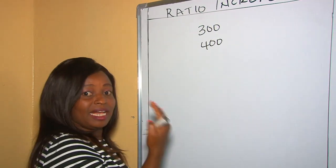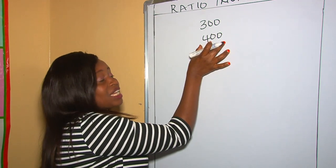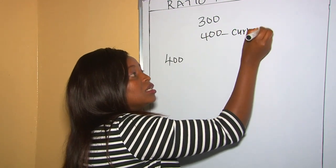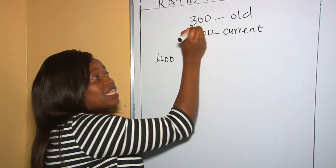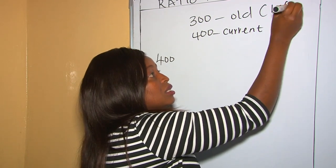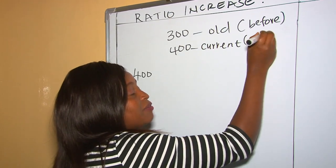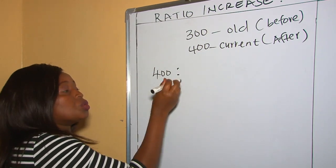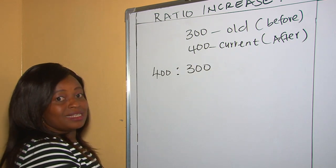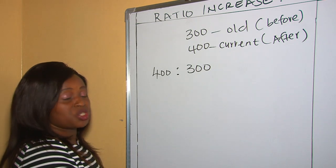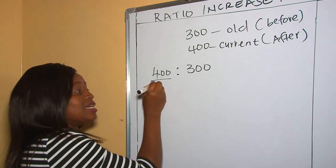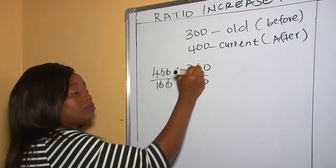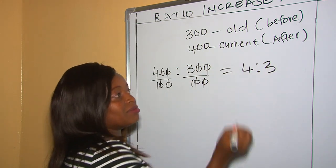After the end of term exam, if you want to express this as a ratio increase, we begin with the current one — 400 is the current, 300 is the old one. These are before increase and these are after increase. So we begin with the current one: 400 is to 300. Now we simplify our ratio. We look for a common divisor — 100 is a common divisor for both numbers. So our increased ratio is 4 is to 3.